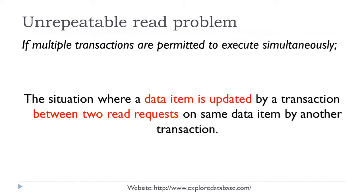One more problem is the unrepeatable read problem. This occurs when a data item is updated by one transaction between two read requests on the same data item by another transaction. For example, when booking a movie ticket, you first check availability and see four tickets. When you try to perform an update, another transaction reduces the seat count. When you attempt the write operation, you no longer see the old value. This is called the unrepeatable read problem, also caused by interleaved execution.